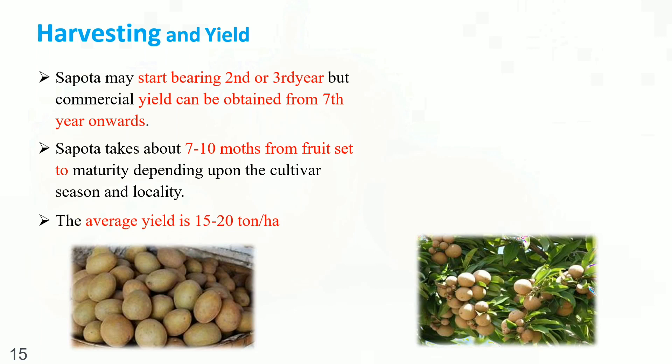Harvesting and Yield. Spotter may start bearing during the 2nd or 3rd year, but commercial yield can be obtained from the 7th year onwards. It takes about 7 to 10 months from fruit set to maturity, depending upon the cultivar, season and locality. The average yield is 15 to 20 tons per hectare.